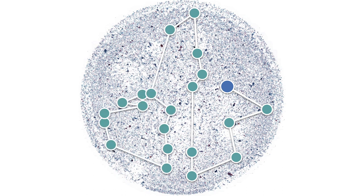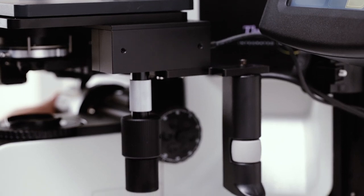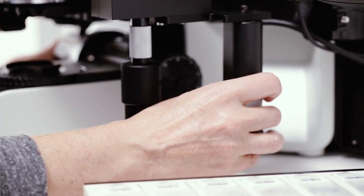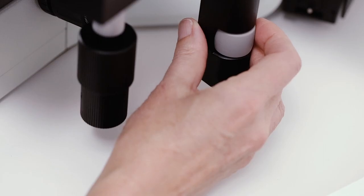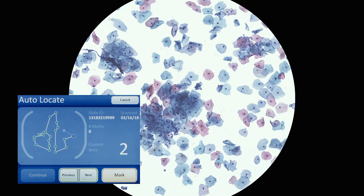During the automated review process, the ThinPrep Integrated Imager presents the 22 fields of view to the cytotechnologist for interpretation. The user moves through the fields of view sequentially using the ergonomic controller. Progression of the review is clearly shown on the touch screen.